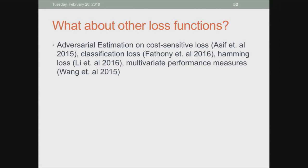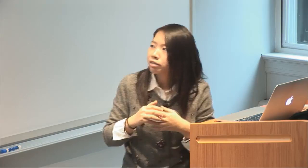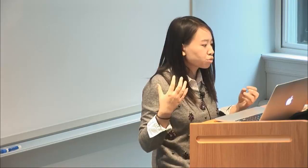Regarding other loss functions: we are able to generalize the variational estimation framework to cost-sensitive loss, classification loss, Hamming loss in structured prediction, and multi-variate performance measures. This is a good starting point for looking at different covariate shift methods. Previously most work focused on log loss under covariate shift because log loss penalizes you heavily when you are very certain about a wrong prediction — but it is possible to extend this framework to more general covariate shift methods with different performance measures.